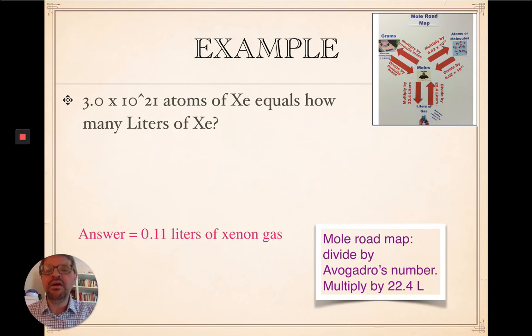Last one here. We have this many atoms of xenon. How many liters would that be? Three times 10 to the 21st. So, we're at atoms or molecules, and we want to know liters of gas. Xenon's a noble gas. It's a gas in normal conditions. So, we can convert to liters. So, your first step, you divide by Avogadro's number. And it looks like this.